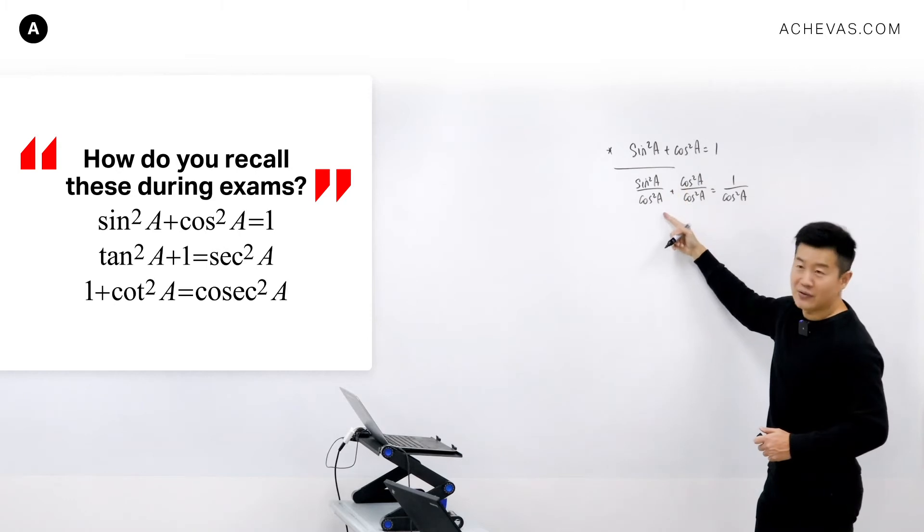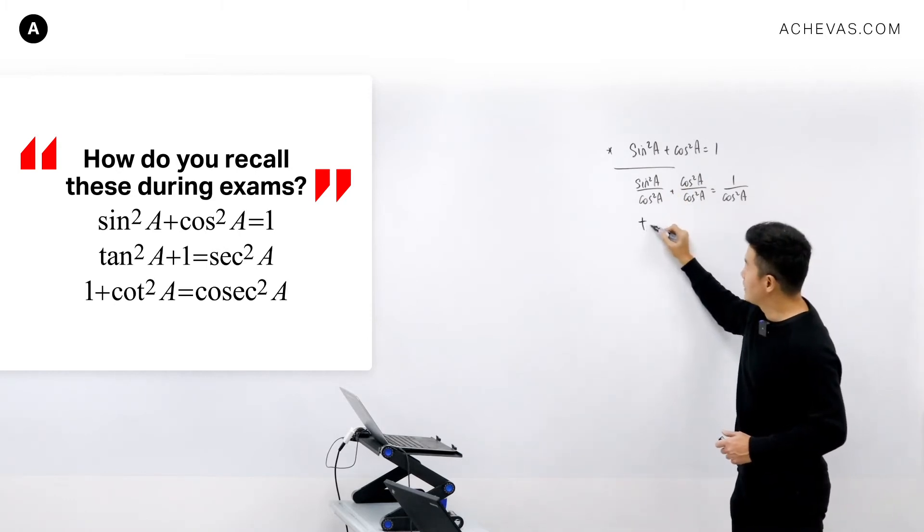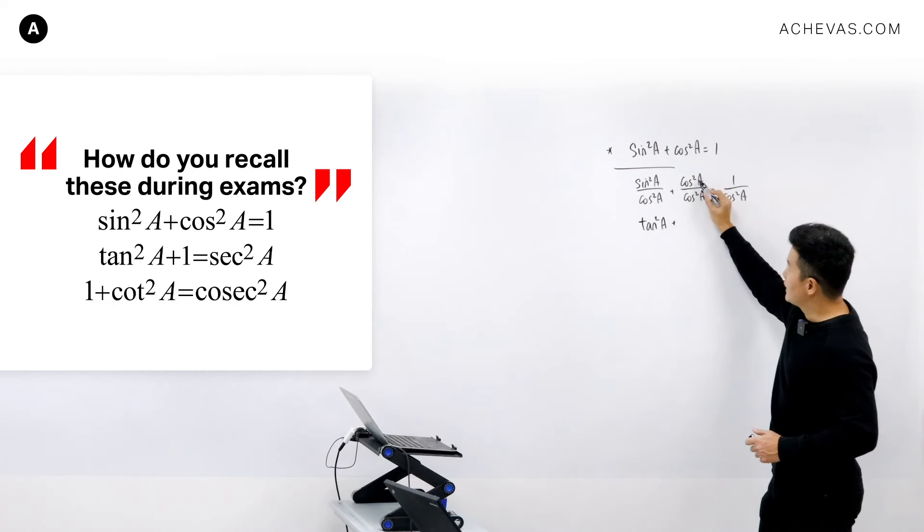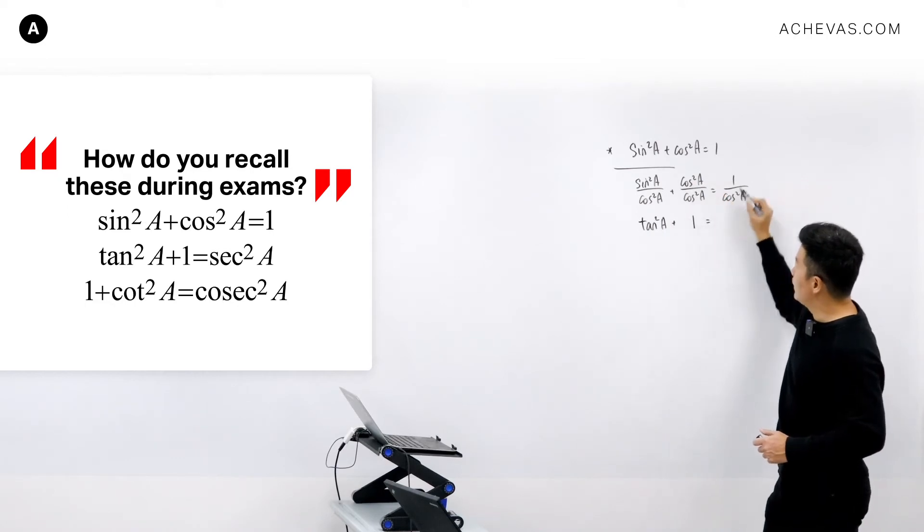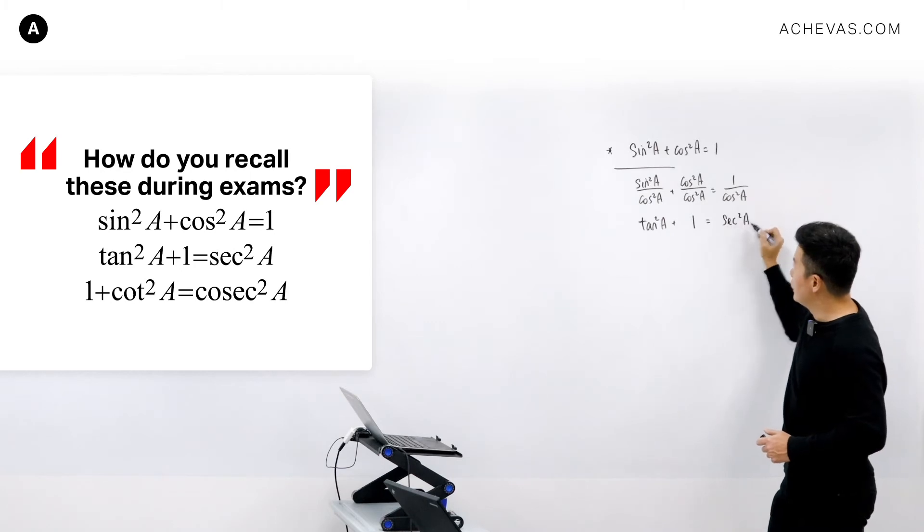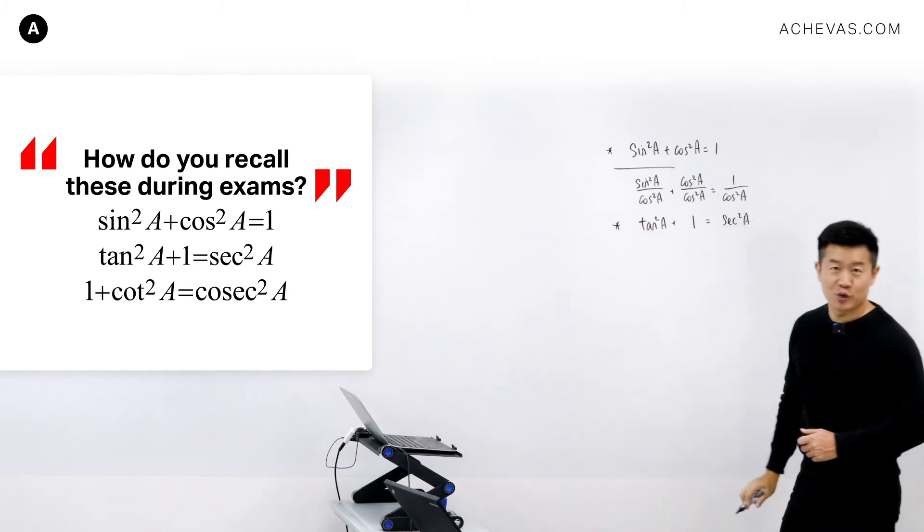sin²A divided by cos²A gives us tan²A, and cos²A divided by cos²A is 1. 1 divided by cos²A is sec²A. This gives me my second trigonometric identity.